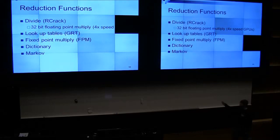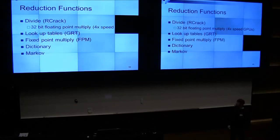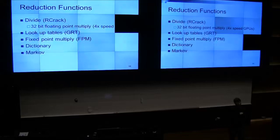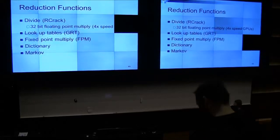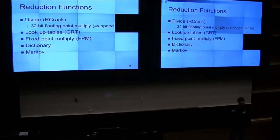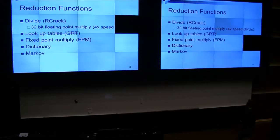Reduction functions. There are a bunch of different methods. There's divide, which you'd probably know from Rainbow Crack. The original creator of rainbow tables also used divide, but doing 32-bit divide in specific cases. Rainbow Crack basically just uses 64 bits and it's a very general reduction function. I rewrote the reduction function to use 32-bit floating point multiply instead of 64-bit divide, and you get a 4x increase on GPUs.